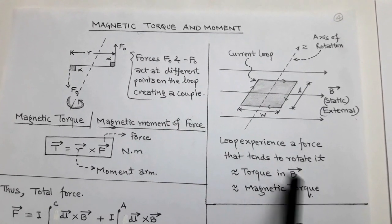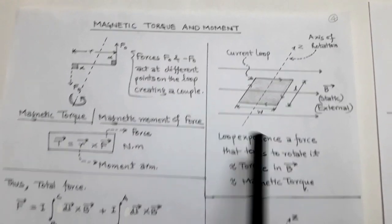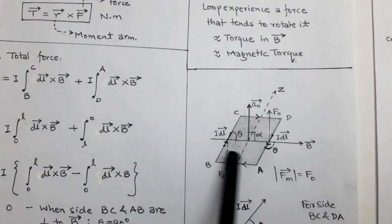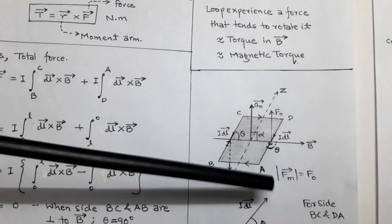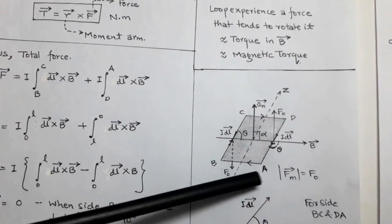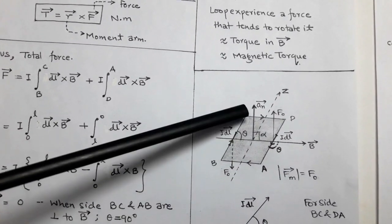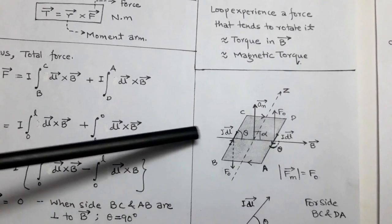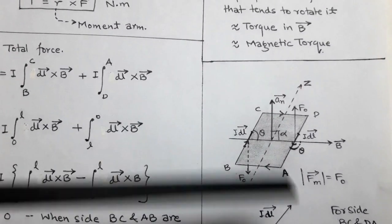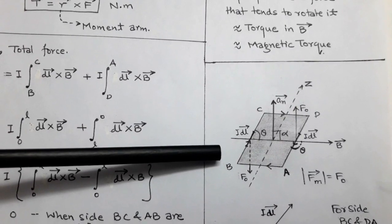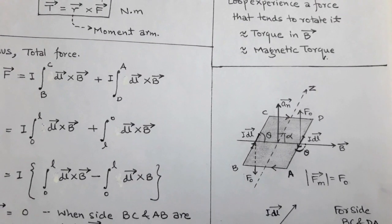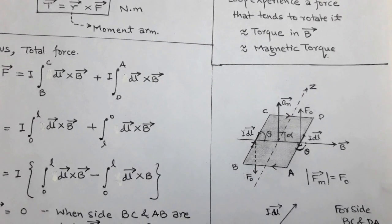We consider a current loop that is a rectangular one and current is flowing in a clockwise direction. This current loop has four sides AB, BC, CD, and DA. First we take sides BC and AD. On sides BC and AD, we consider a small current element — that is the dl vector. On side BC, the current is flowing from B to C, so the direction of the current element dl vector is from B to C.